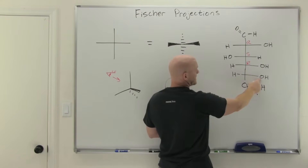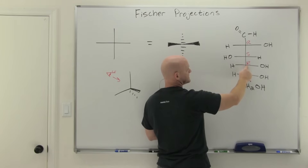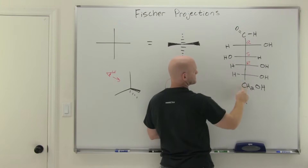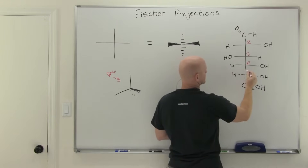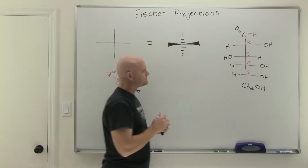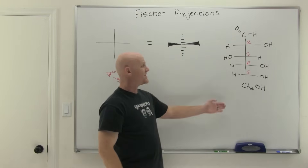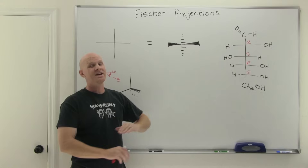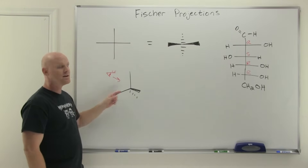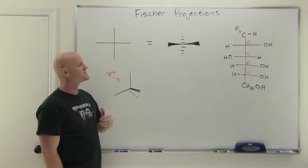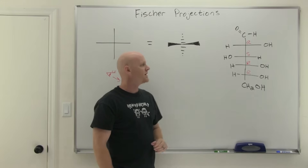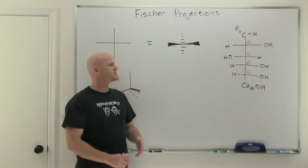For the last chiral center, oxygen is number one, the carbon above is number two, and the carbon below is number three. Going around looks like S, but again the number four priority is on the horizontal as a wedge, so it's actually R. And just like that, we've quickly assigned R and S to all four chiral centers of D-glucose.